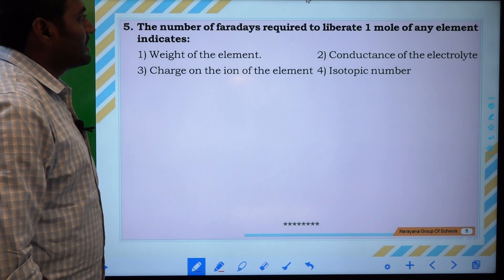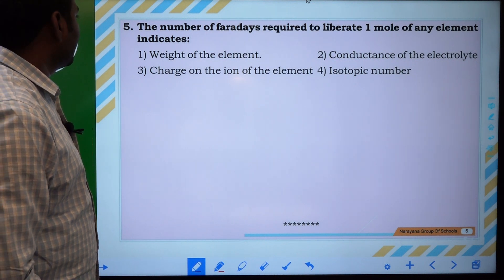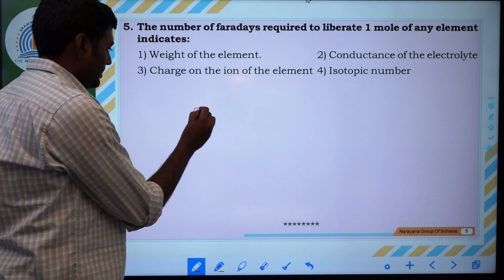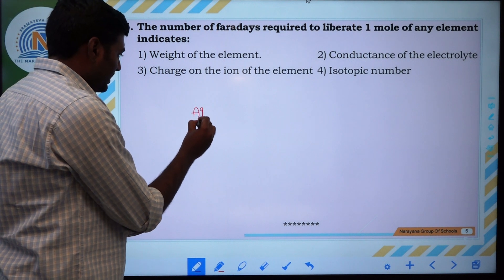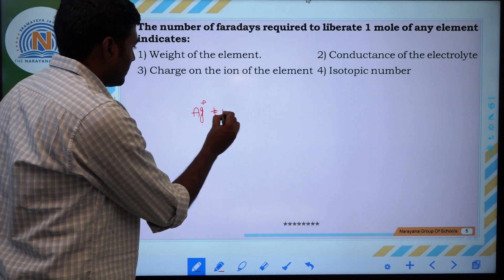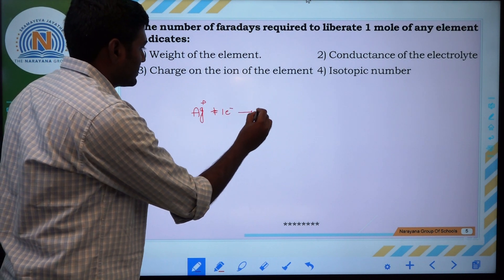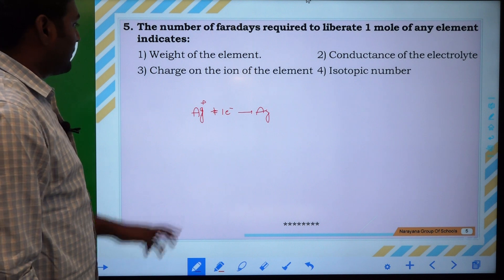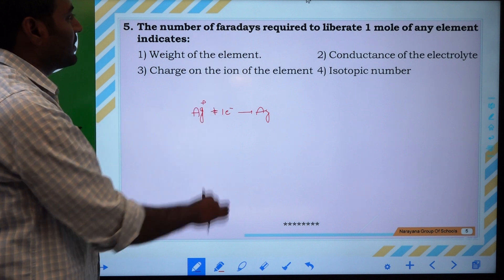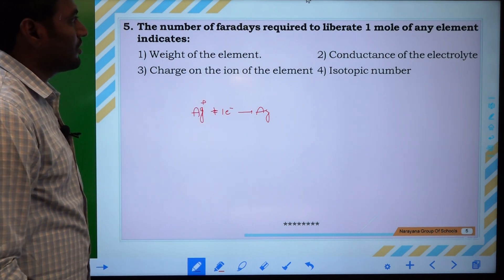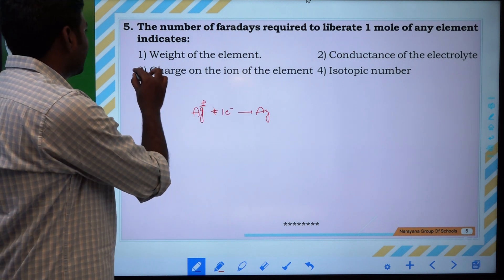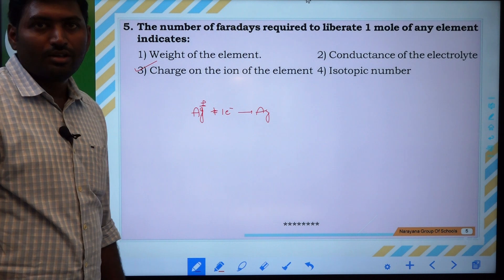The number of Faradays required to liberate one mole of any element indicates... One mole of any element indicates, for suppose, if you take Ag plus, to convert this Ag plus into Ag, it requires one electron. It means one Faraday is required to convert Ag into Ag plus. Hence, the number of Faradays required for liberation of one mole of any element indicates the charge, the charge of the element. It is the correct answer. Thank you.